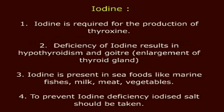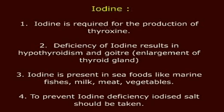Iodine is required for the production of thyroxine. Deficiency of iodine results in hypothyroidism and goiter, which is the enlargement of the thyroid gland. Iodine is present in seafoods like marine fish, milk, meat, and vegetables. To prevent iodine deficiency, iodized salt should be taken.